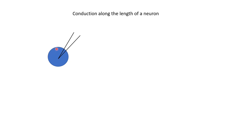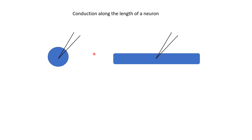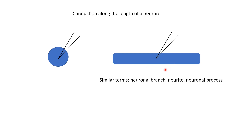But in reality, we know that neurons have thin and long branches — the dendrites and the axons. The real picture is very different from a spherical object. These dendrites and axons can together be called neuronal branches, or neurites, or neuronal processes. These terms include all types of branches, both axons and dendrites.